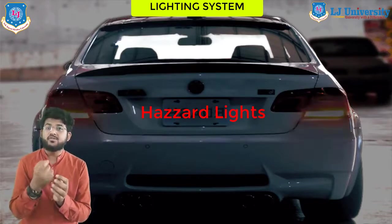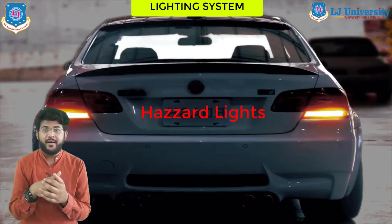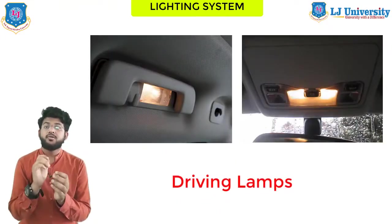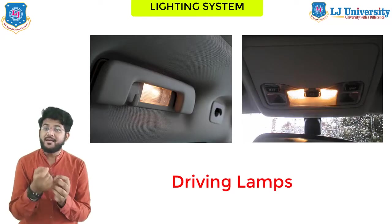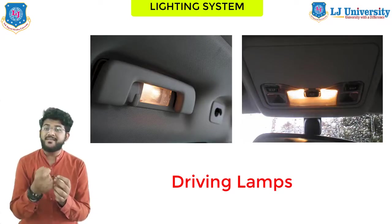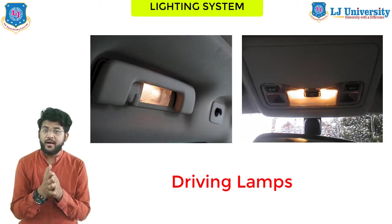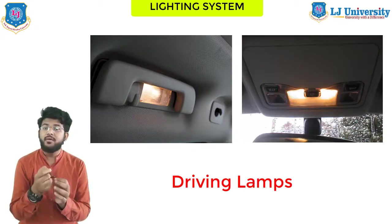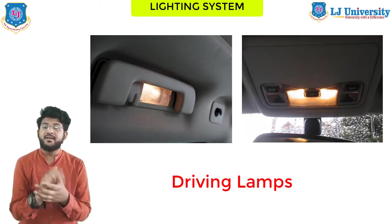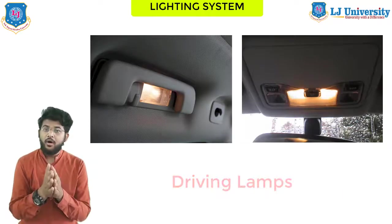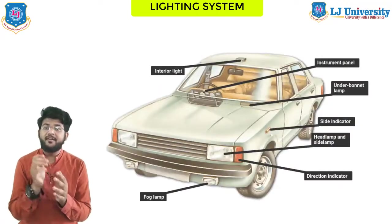Hazard lights should only be used as a warning of distress or traffic problems — never use them as a stop signal or illegal parking permit. Next are interior driving lamps, which are located inside the cab of the vehicle. They are used to brighten the cab for the passenger or driver to safely check maps, directions, or locate items in the dark, and should never be used for long periods while inside the car.